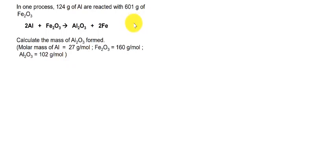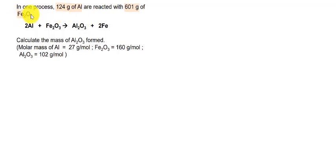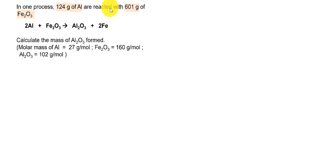Alright guys, so in this video I'm going to show you how to answer the question involving determination of the limiting reactant. So have a look at this question. We have a mass of aluminium and also a mass of iron(III) oxide (Fe₂O₃). The balanced equation is already given — you need the balanced equation. So how do you know when you have to determine the limiting reactant?